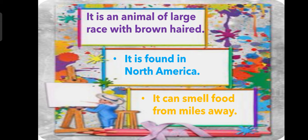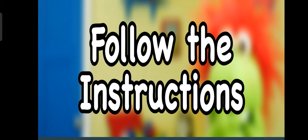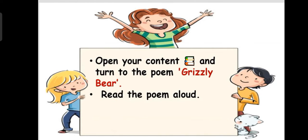Here is a question — all of you read it with me: What should we not dare to do? Give your answers in the comment section. After reading the poem, you will find the answer to this question. Now I am going to give you some instructions. Open your content book — your English reader book — and turn to the poem Grizzly Bear. This is chapter 16, page number 99.